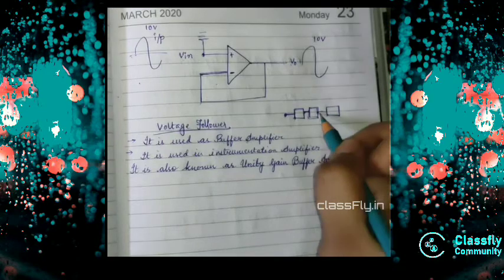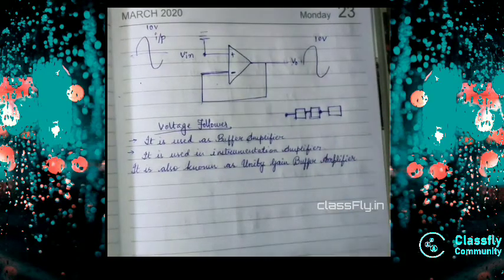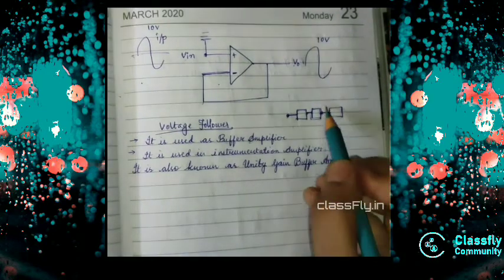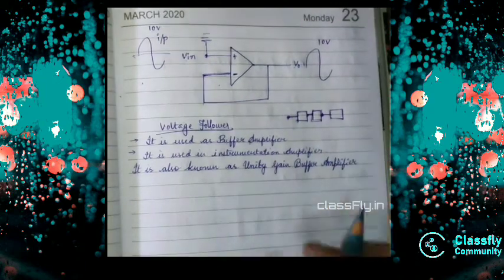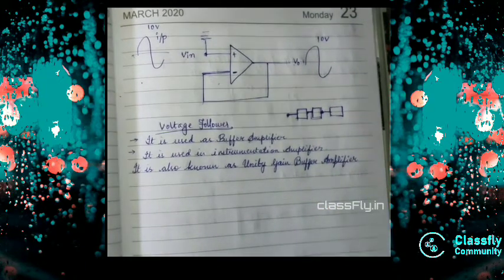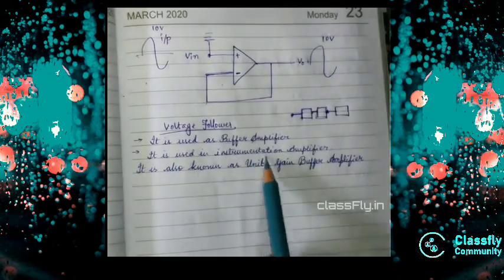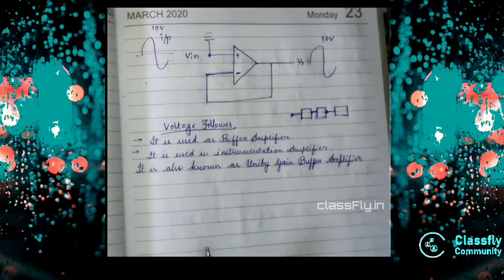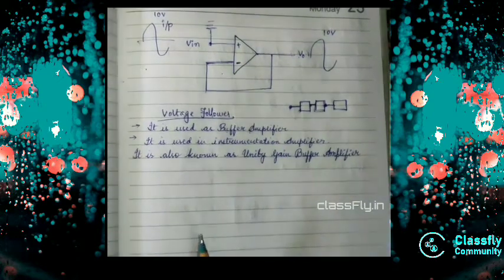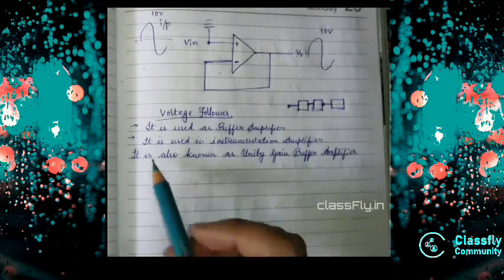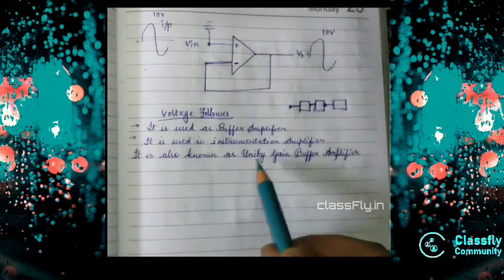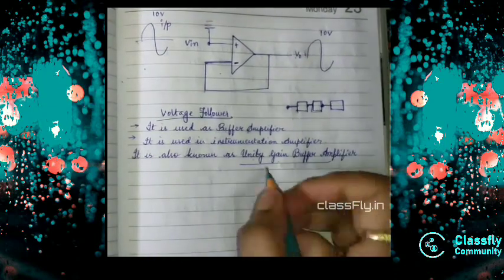With the high potential, we will input the higher potential connection in the voltage follower and the lower with the lower one. Like this, voltage follower can be used and helps in high potential to low potential connection. It is also used in instrumentation amplifier to amplify. We also know that it is known as unity gain buffer amplifier.